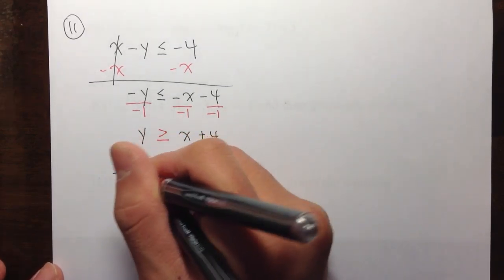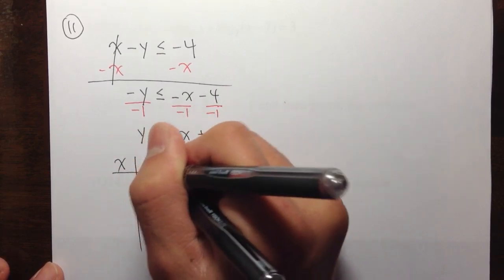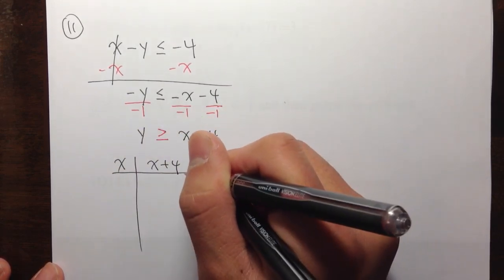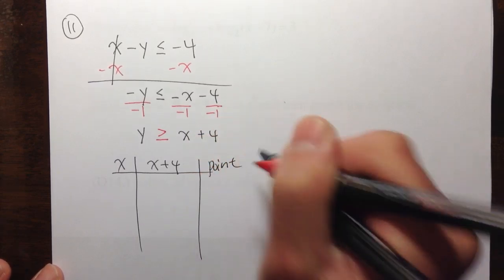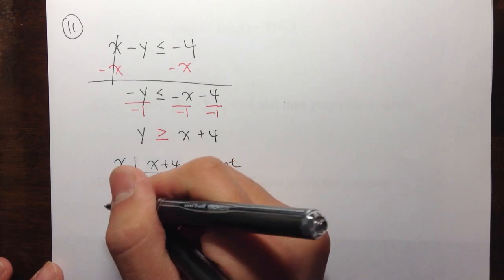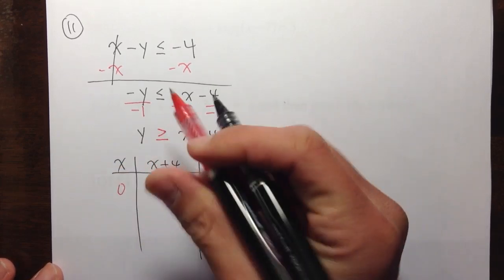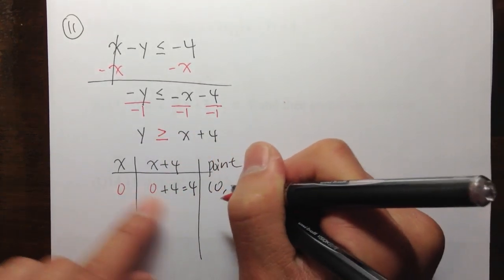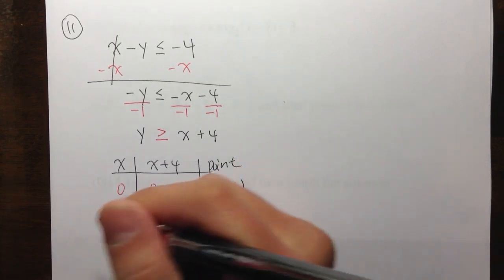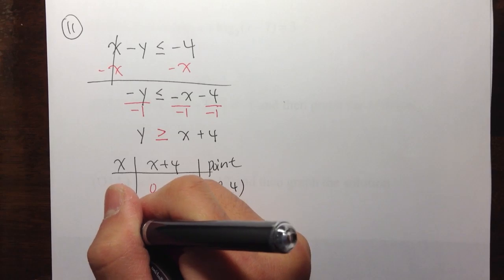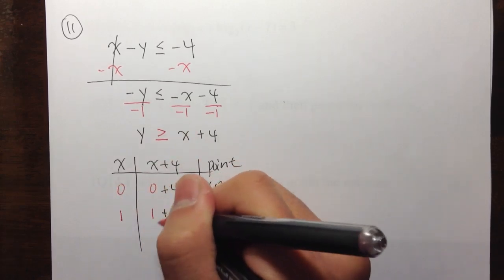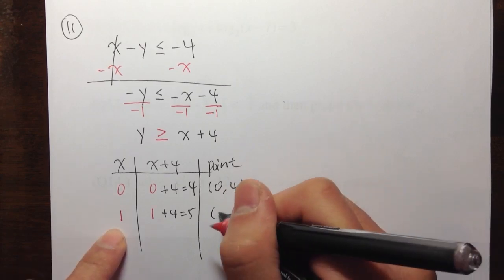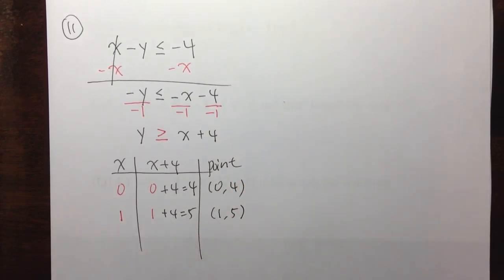Let me make a table right here. I have x, and then I need to get x plus 4 for the y values, and then I need the points. I can pick any number for x — I'll pick 0, and then I get 0 plus 4 which equals 4. So the point is (0, 4). Then the next easy number is 1: 1 plus 4 equals 5, so x is 1, y is 5. For straight lines, 2 points is enough.